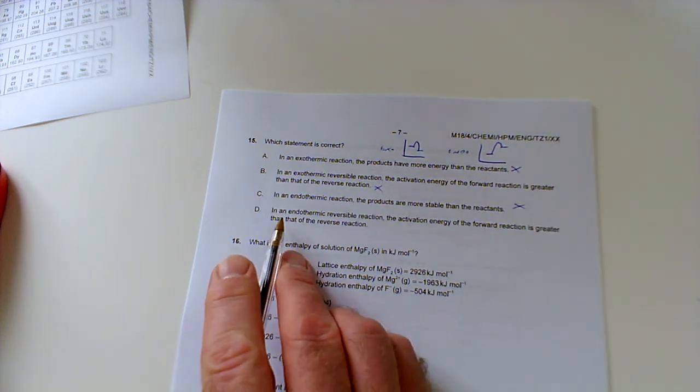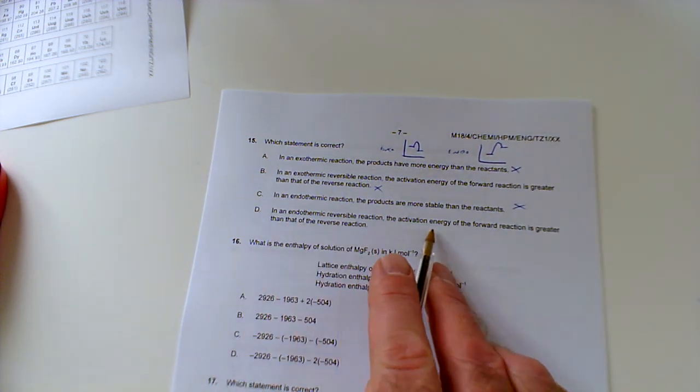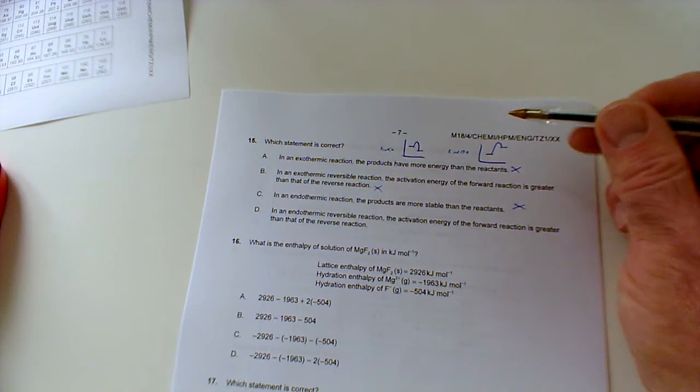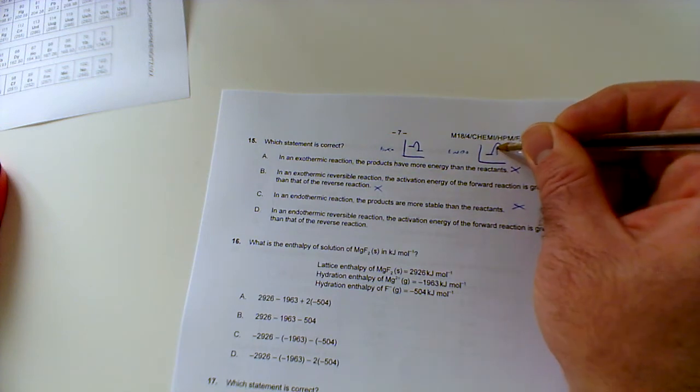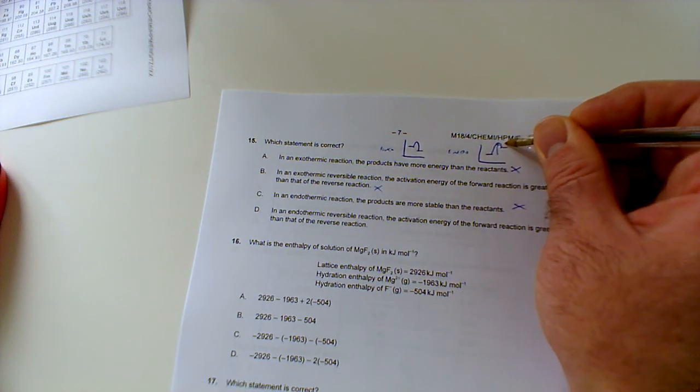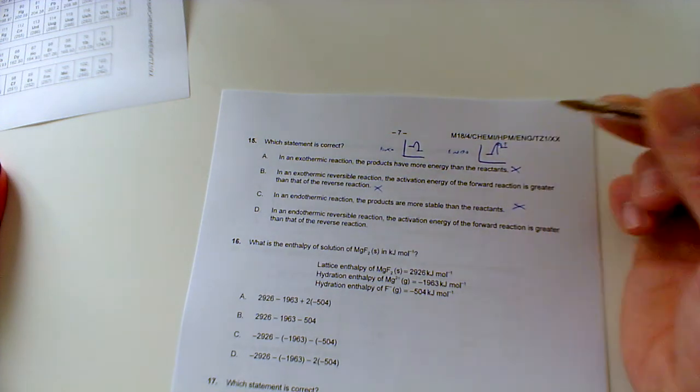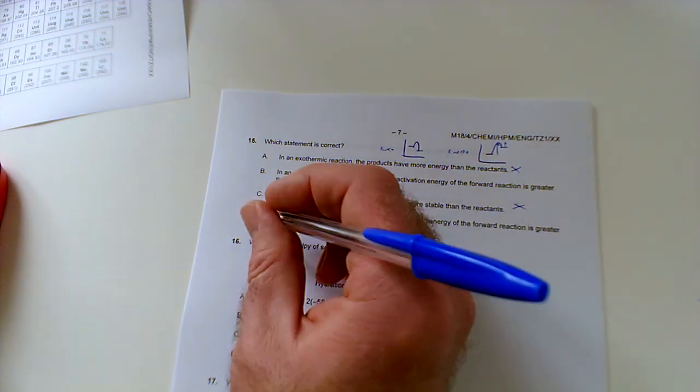In an endothermic reaction the products are more stable than the reactants. Here is endothermic, the products are less stable, they're higher in energy than the reactants. It's not this one, so it must be this one. An endothermic reversible reaction, the activation energy of the forward reaction is greater than that of the reverse reaction. Well yes it is. Here's the activation energy for the forward reaction. The reverse reaction would just be that distance there because it would be exothermic going backwards. So D is the right answer.